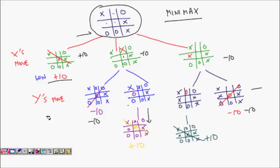That is the Minimax algorithm. You play forth and backward between X and O. Branch out all possibilities and see in which case you are winning — getting the highest point — and play only those moves.